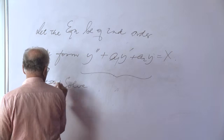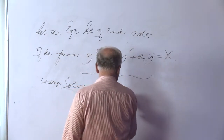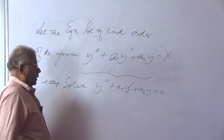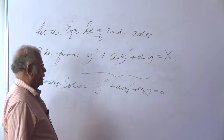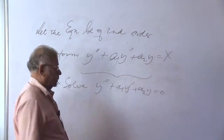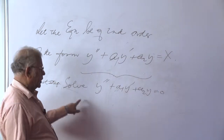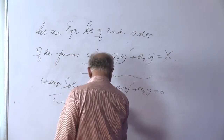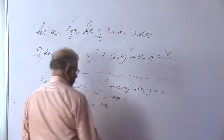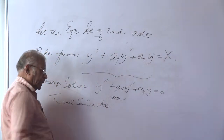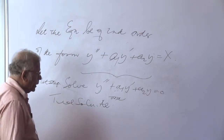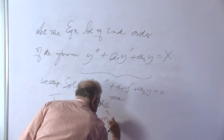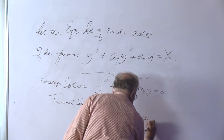We solve the equation first by making it homogeneous — putting 0 on the right-hand side. Such an equation has an auxiliary equation that comes from a trial solution assumed to be e^(mx). This leads to an auxiliary equation of the form m² + a₁m + a₂ = 0, whose roots are m₁ and m₂.